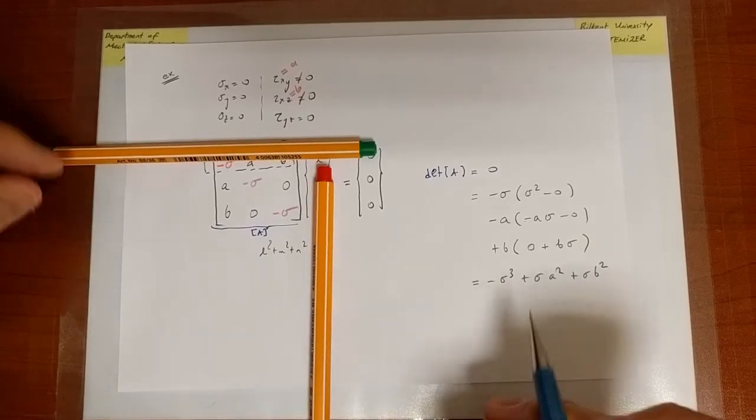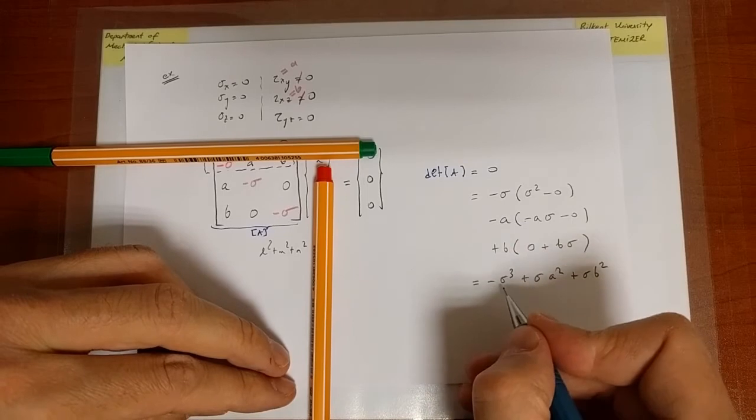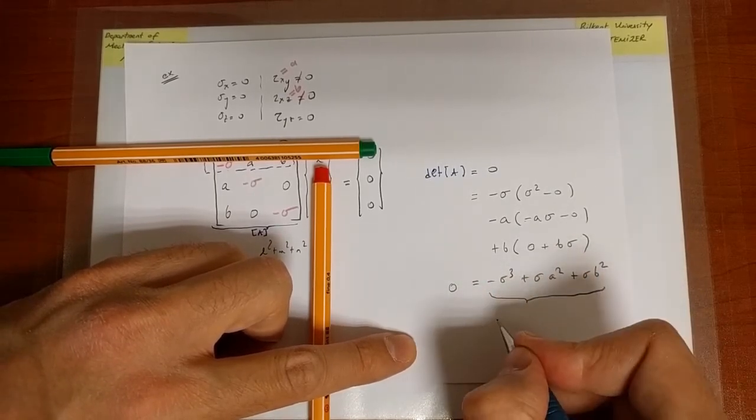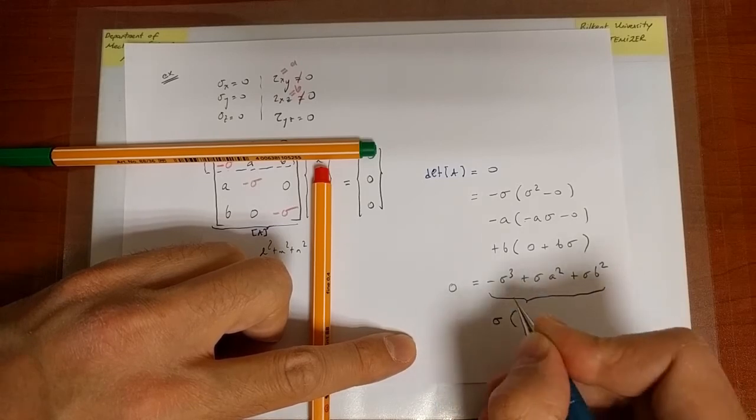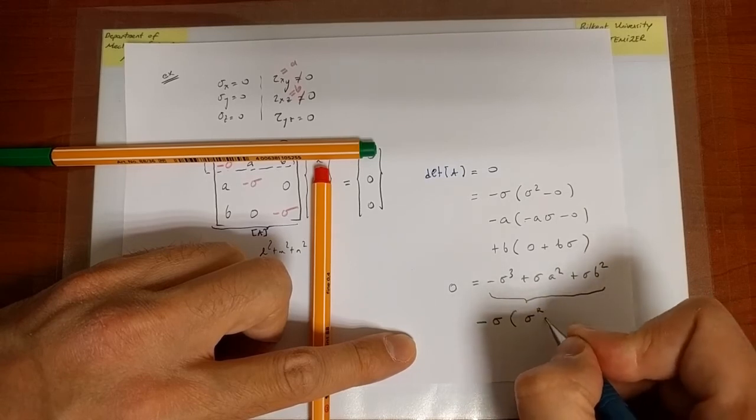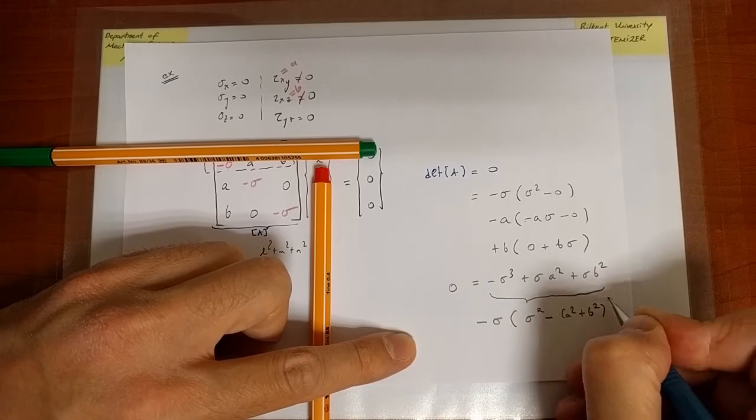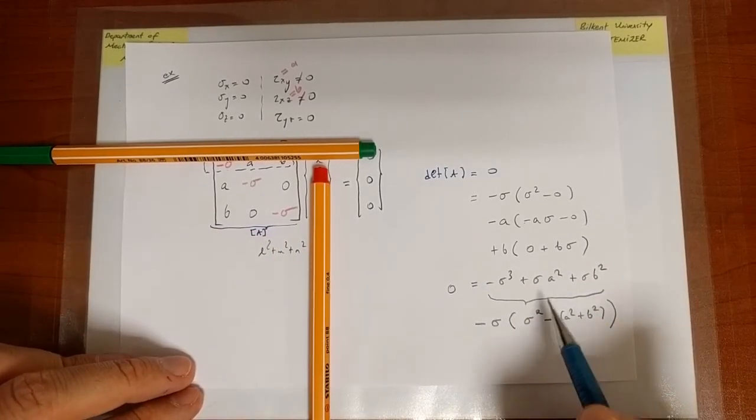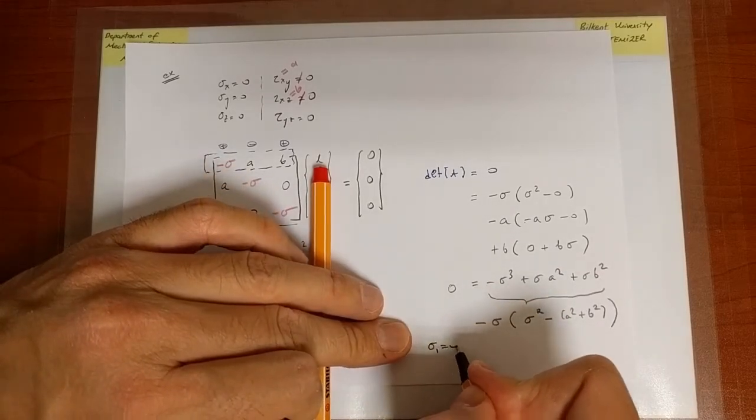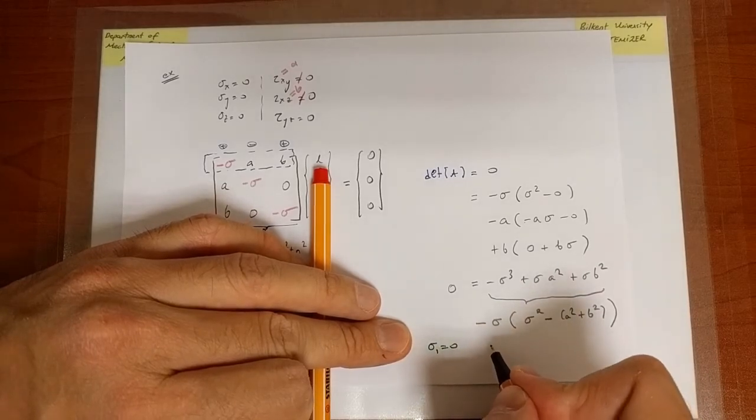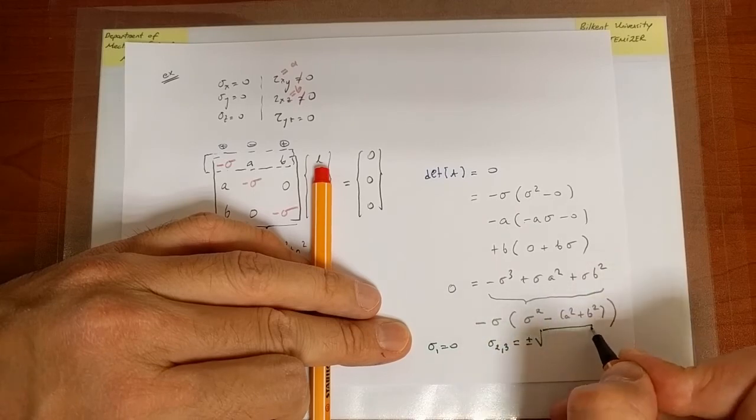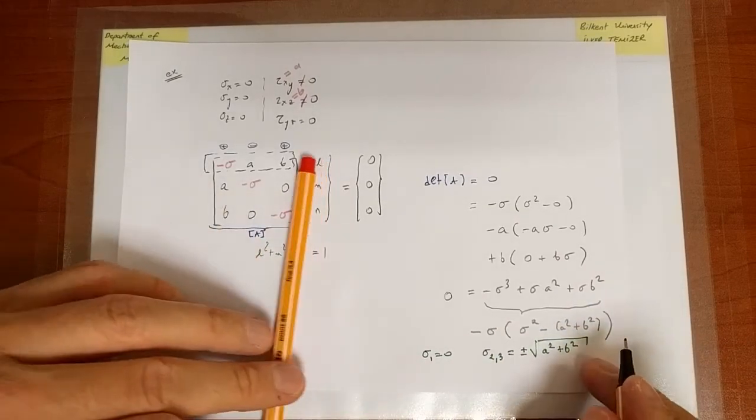So if you order this, we're going to get minus sigma cubed plus sigma A squared and then plus sigma B squared. So that's the determinant which I obtain, which I can recast as, so I have that equals 0. So I'm going to take sigma outside, and I'm going to write this as sigma multiplying minus sigma squared plus, or let me take the minus outside as well. So I'm going to have sigma squared minus A squared plus B squared. And hence it seems that I have three roots. There is sigma 1 which is equal to 0, and then there is sigma 2 and sigma 3 which are equal to plus minus square root A squared plus B squared, and we're done.